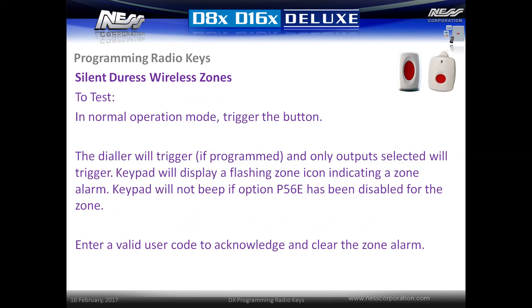To test a wireless duress zone in normal operation mode, trigger the button. The dialer will trigger if programmed, and only the selected outputs will activate. The keypad will display a flashing zone icon indicating a zone alarm; the keypad will not beep if option p56e has been disabled for the zone. Enter a user code to acknowledge the alarm and clear the notification.